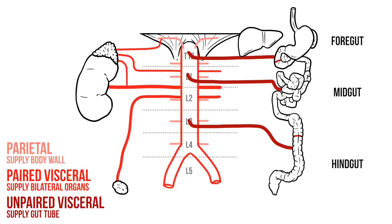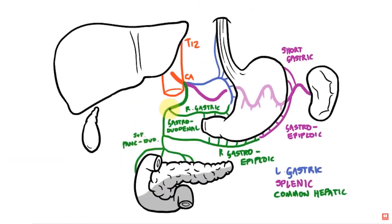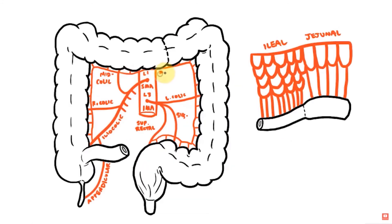For now I'd just learn which portion of the gut tube each vessel supplies, but if you want to know more about the branches of these vessels or their venous drainage, you can find a playlist of some other videos in the description below.